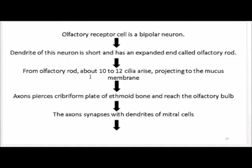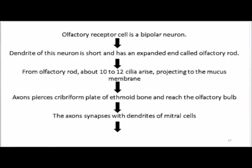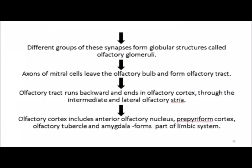The axons of the mitral cells leave the olfactory bulb and reach the olfactory tract. Different groups of receptor cell axons and mitral cell dendrites synapse to form structures known as olfactory glomeruli. The olfactory tract goes to the olfactory cortex, which includes the anterior olfactory nucleus, pre-piriform cortex, olfactory tubercle, and amygdala — which is part of the limbic system. A flow chart is provided to help score marks in exams.